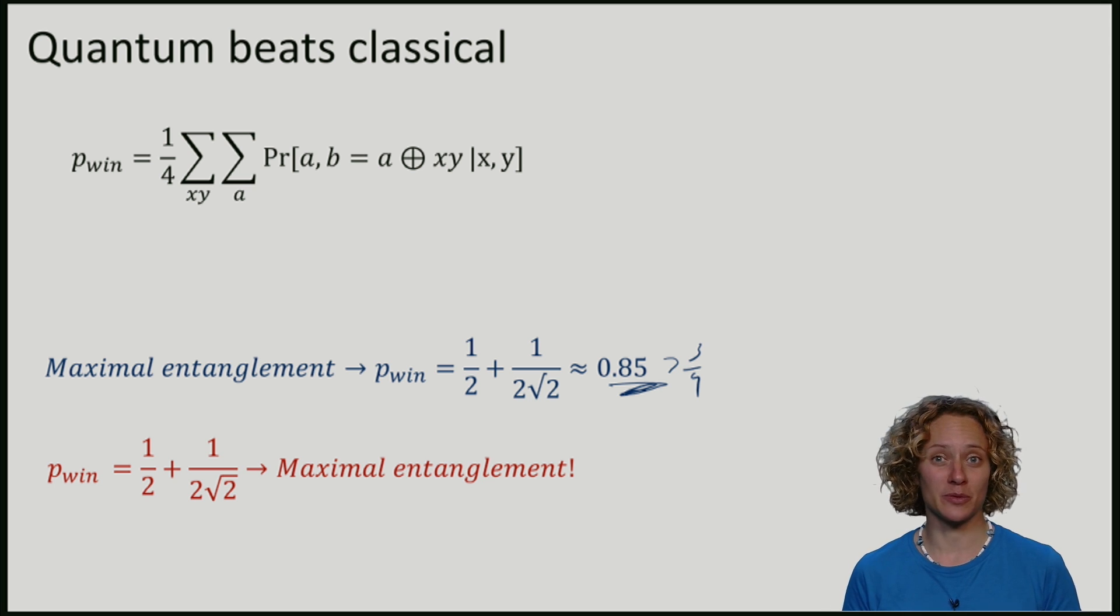The cool thing for quantum cryptography is that also the opposite is true. If we observe a winning probability that is strictly larger than 3 quarters, then we know that in quantum mechanics, the state must have been entangled. In fact, if they can observe a winning probability of 85 percent, then the state that Alice and Bob share must have been maximally entangled. So there is a quantitative relationship between the winning probability and the amount of entanglement. You will see much more about this when we later discuss device-independent cryptography.